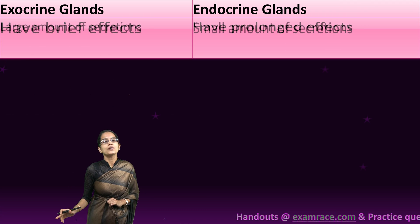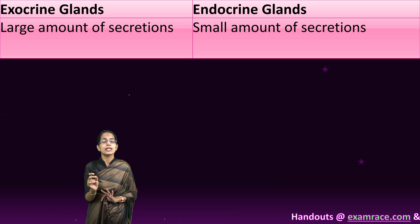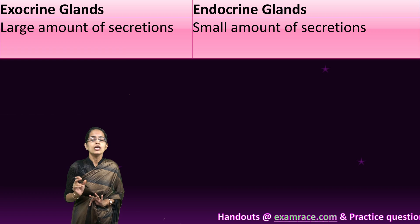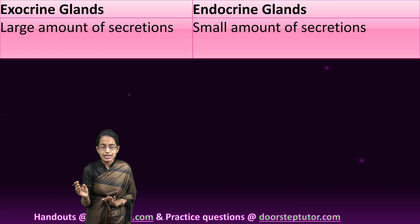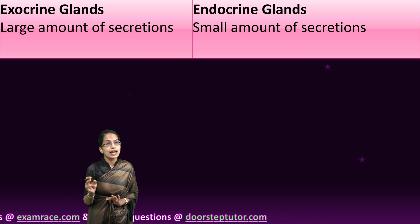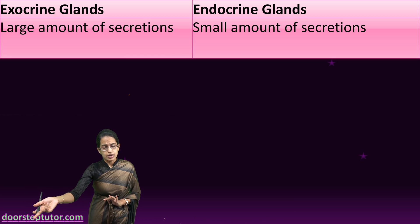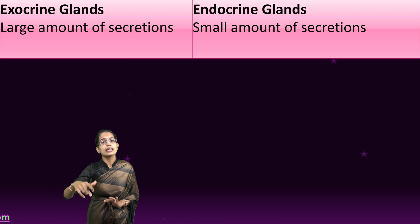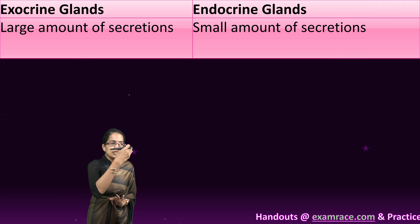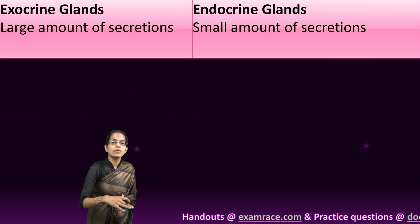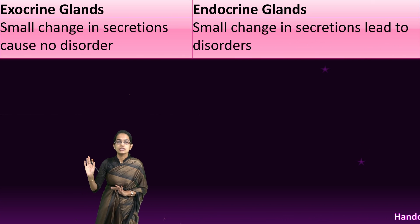Endocrine glands have a prolonged impact, but their secretions are very small in quantity. The proportion of secretions is relatively very less in endocrine glands — and why? Because they secrete directly into the bloodstream, so even a small amount is sufficient. However, exocrine glands produce large amounts of secretions, mainly because the secretions travel by duct.